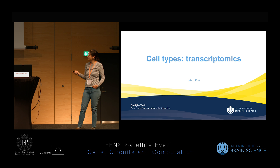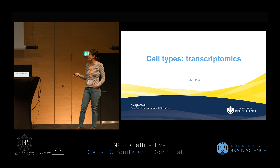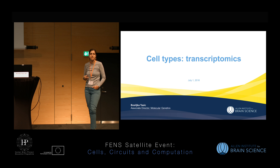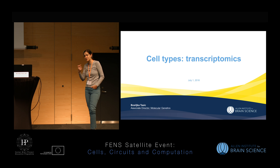Ultimately, what we want to do is acquire more than one data type from a single cell to get better and more accurate classification, and to establish correspondence between these different types of characteristics. This is not going to be a single study that clarifies everything — it's going to be an iterative approach that improves as our techniques improve and our understanding is informed by previous studies.